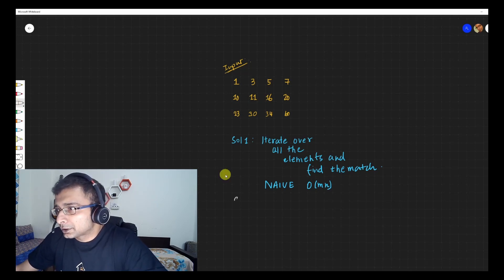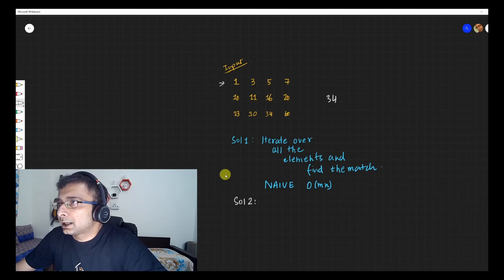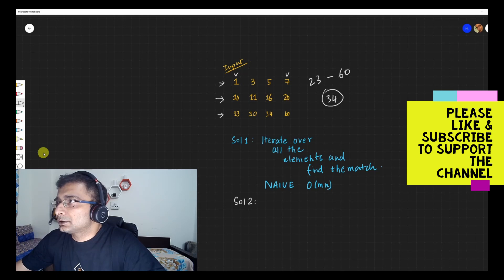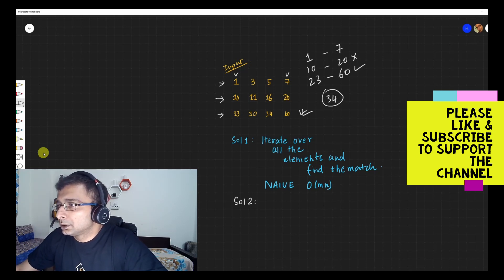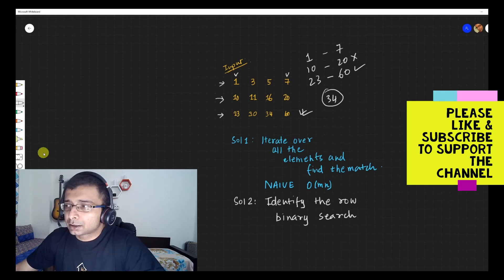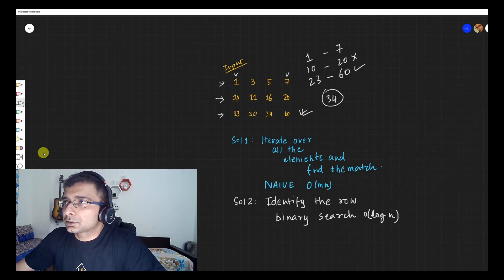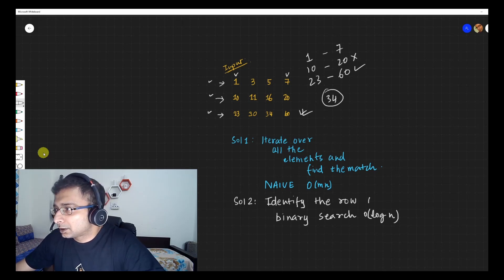There could be a better solution. Since each row is sorted, and let's say I'm looking for element 34, I go over each row and see if the number could fit between the start and end of that row. So identify the row — that's step one — and then do a binary search, which gives log(n). Finding the row costs O(m), so overall this gives O(m + log n) complexity.